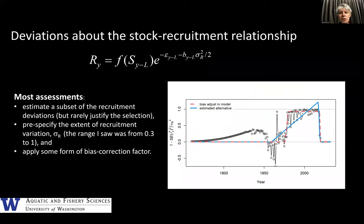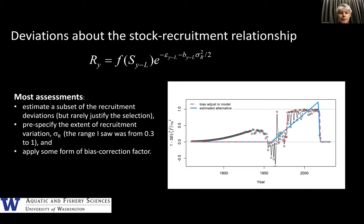One of the questions that always arises is which recruitments should we estimate. Most assessments did not estimate all of the recruitment deviations they could; some did. They all pre-specified sigma-R, and the range was remarkably wide — ranging from 0.3 to 1.0 — and again there seems to be a lack of consistency.